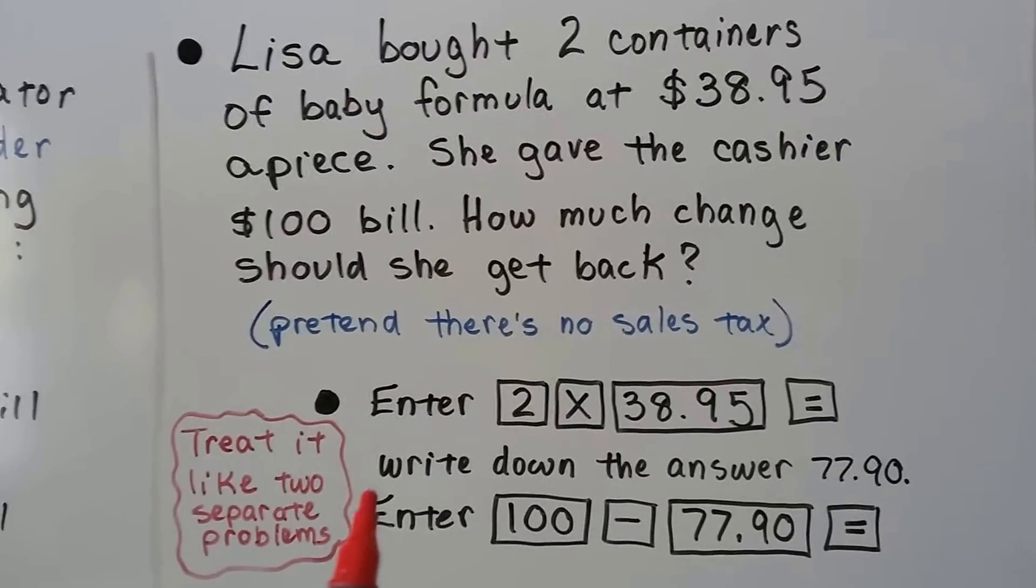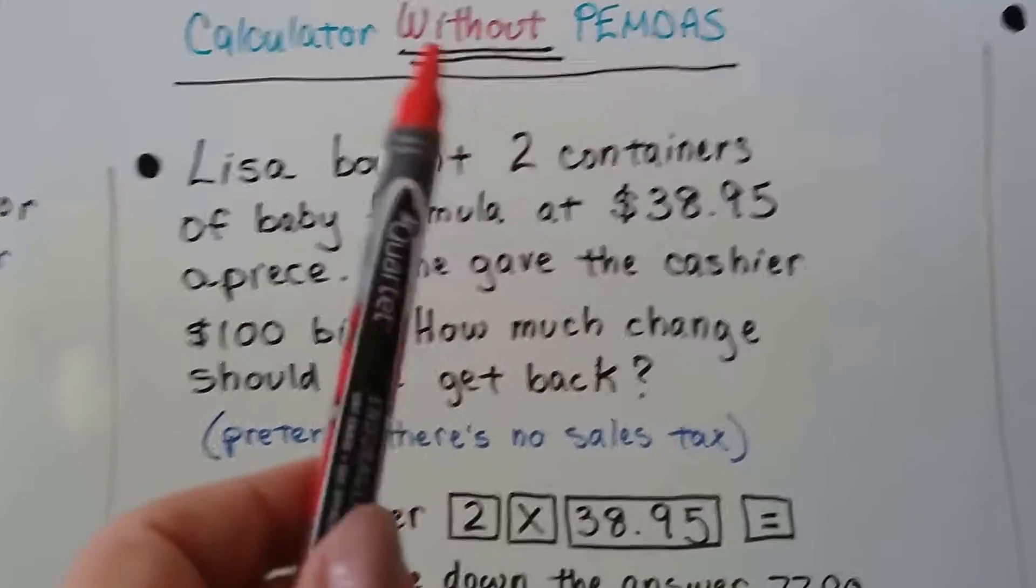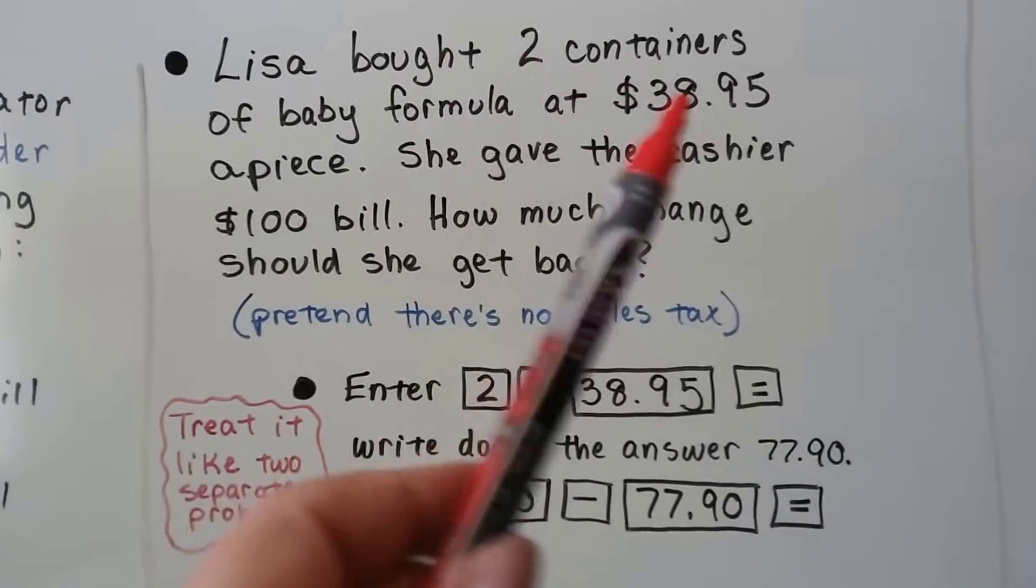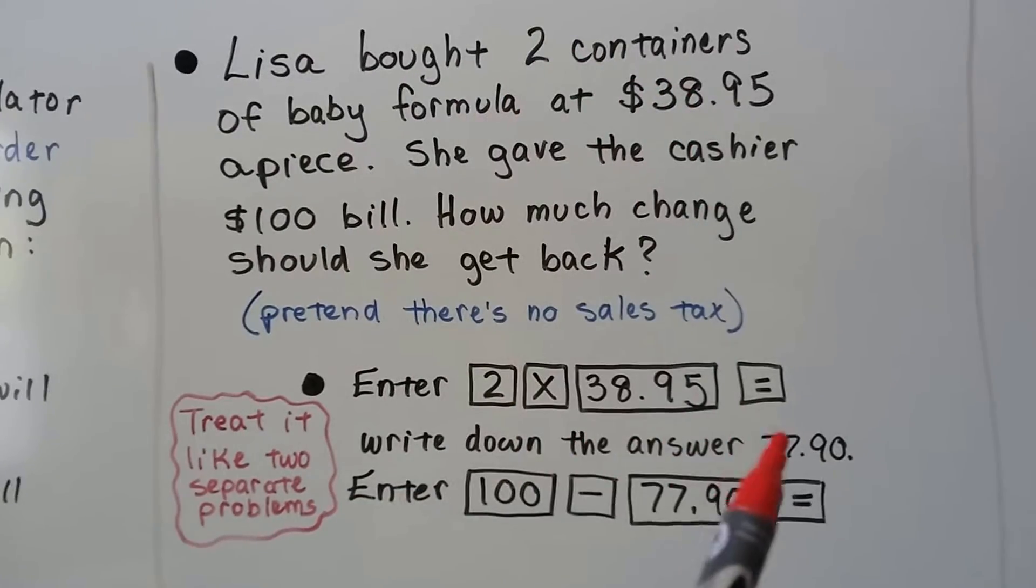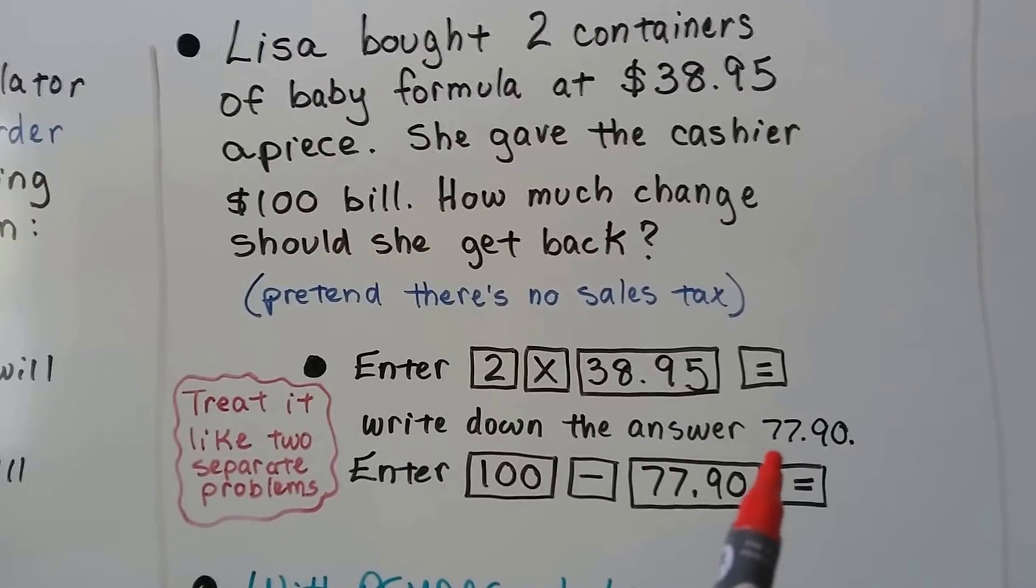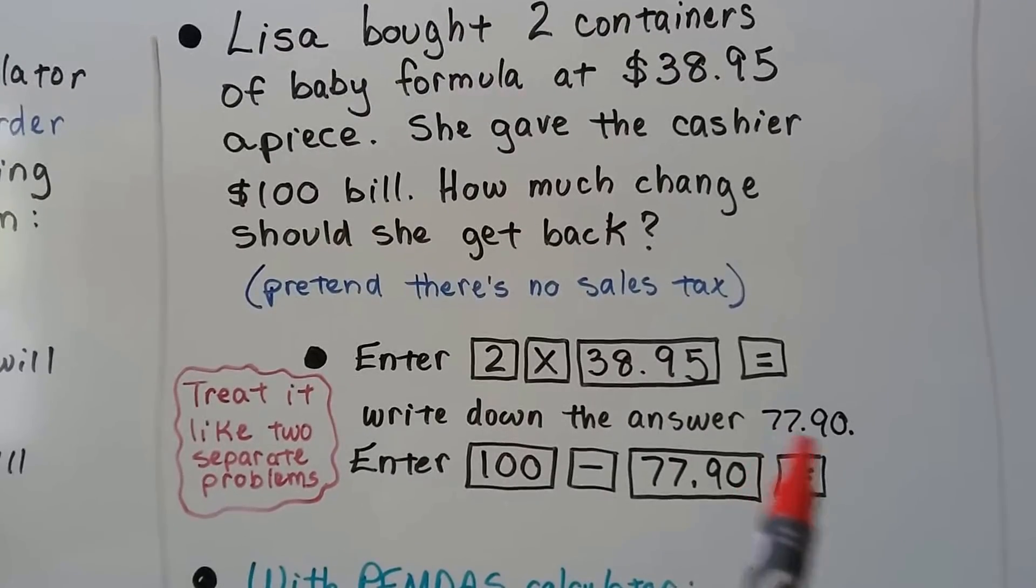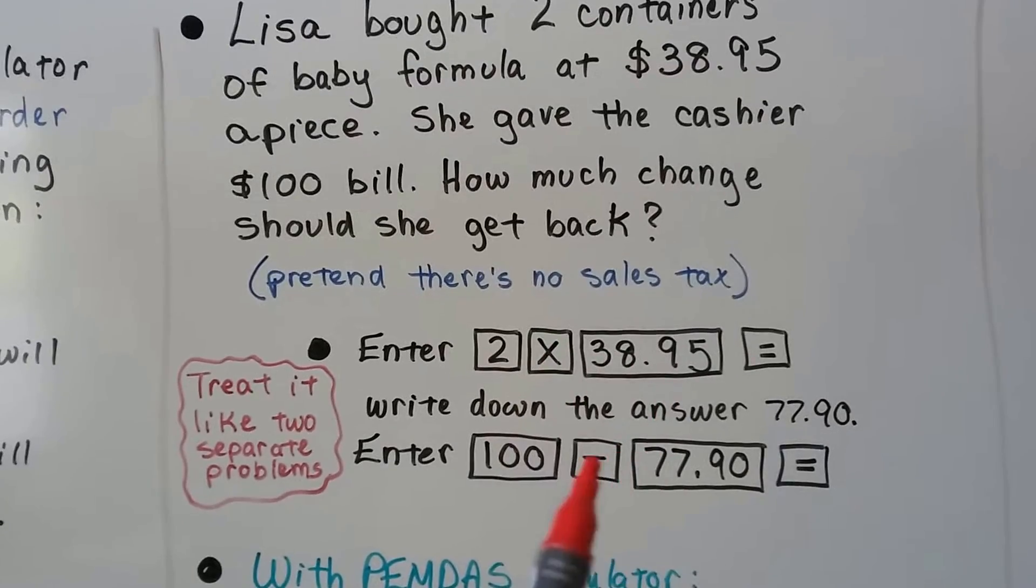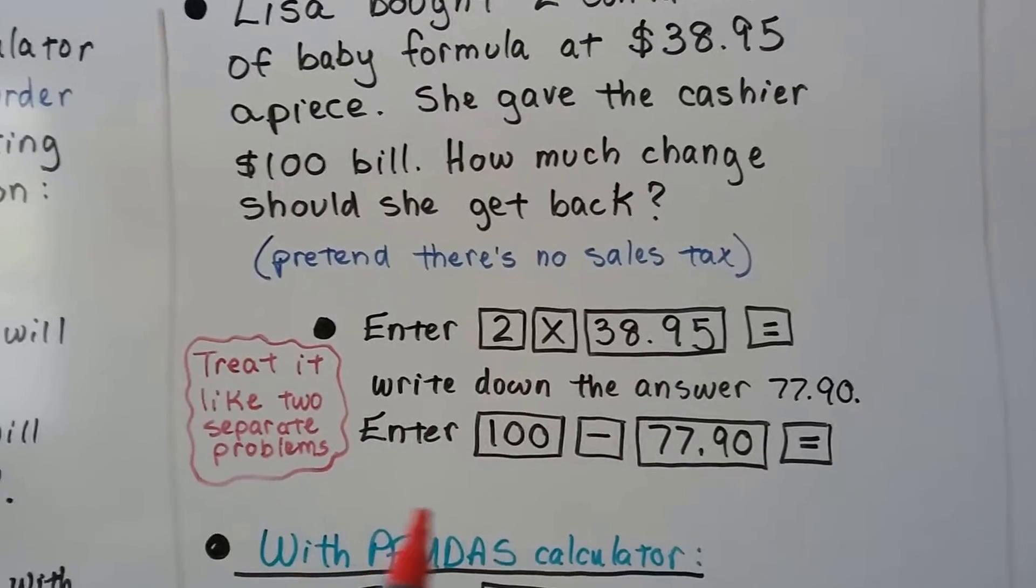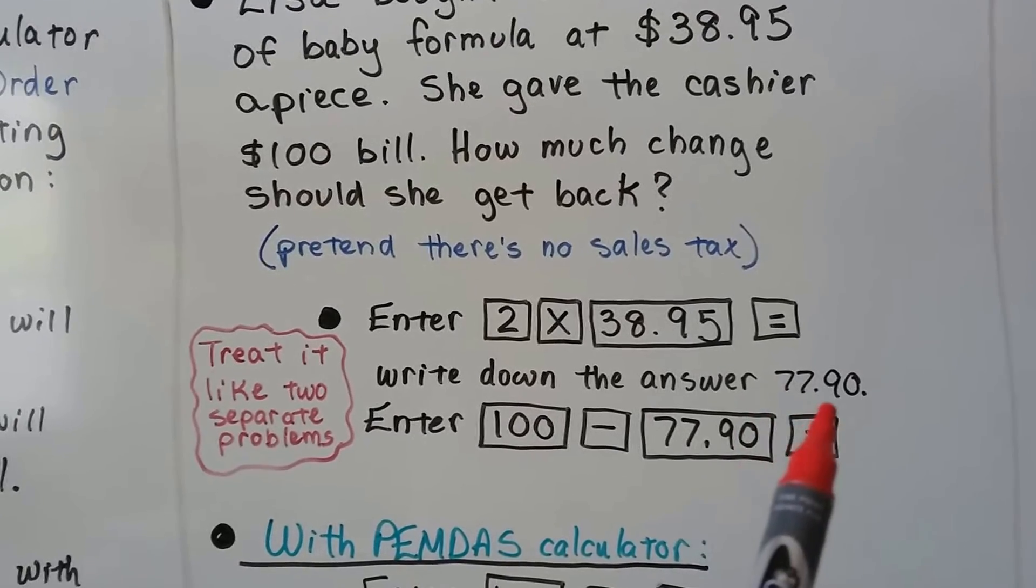We're going to enter, and remember this is without a PEMDAS calculator. We're going to enter the 2 times the $38.95 because she bought 2 of these. We're going to find out what it equals and we're going to write down the answer on scratch paper or off to the side. I wouldn't try remembering it because you're going to end up having to start all over again if you forget what it was. So, scribble it down somewhere. $77.90.